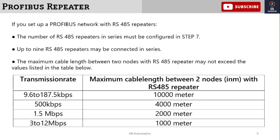The maximum cable length between nodes and the RS485 repeater must not exceed the values in the table. At 9.6 to 187.5 kbps transmission rate, the maximum distance is 10,000 meters. At 500 kbps, it is reduced. At 1.5 Mbps, you need to keep it within 1000 meters. At 3 to 12 Mbps, think about the maximum cable length between 1000 meters.